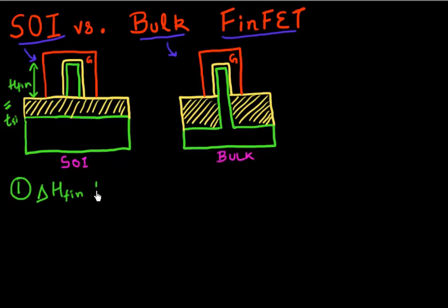As compared to in a bulk substrate, the way you define your fins is you etch these tall fins first, you fill this up with an oxide, and then you recess that oxide back to expose your fin. So this introduces a larger variability in the height of your fins. So that's one disadvantage of making fins using bulk substrates.